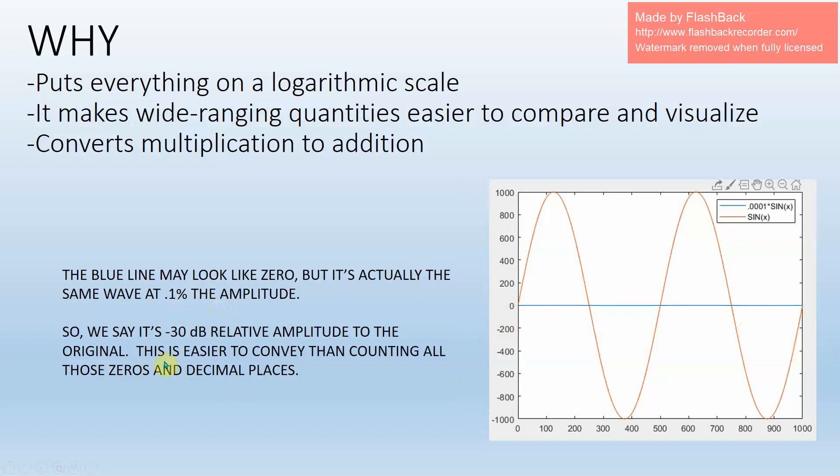So instead of saying that the amplitude of the blue wave relative to the orange one is 0.1% or 1,000 or some confusing number with decimal places and zeros, we say instead it's minus 3 dB relative to the original. And then when you re-plot that on a logarithmic scale, it would show up and be easier to see and easier to discuss with somebody else.